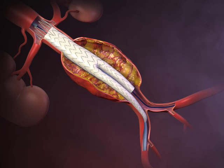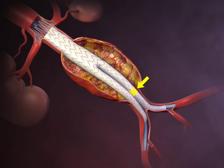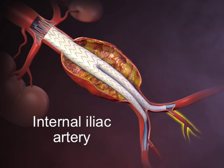The contralateral limb component of the stent graft is then introduced and deployed with overlap sufficient to prevent leakage around the junction of the main body of the device and the proximal end of the limb, so that the distal end of the contralateral limb is located superiorly to the internal iliac artery.